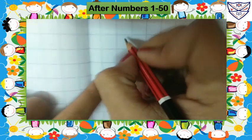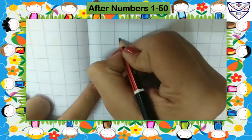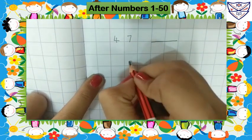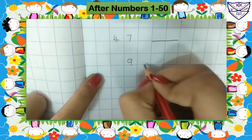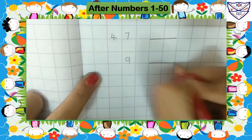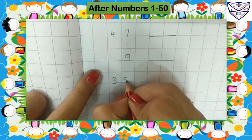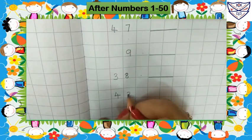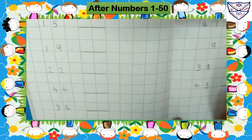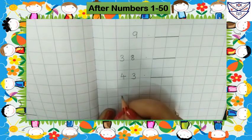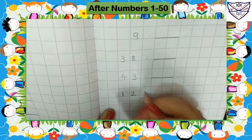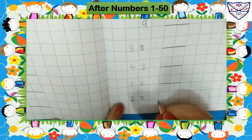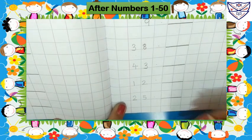Leave one box, put here small dash, leave one line, write here 9. Leave one box, put here small dash, leave one line, write here 38. Leave one box, put here small dash, leave one line, write here 43. Leave one box, put here small dash, leave one line, write here 12. Leave one box, put here small dash, leave one line, write here 25. Leave one box, put here small dash. Now we will fill after numbers.